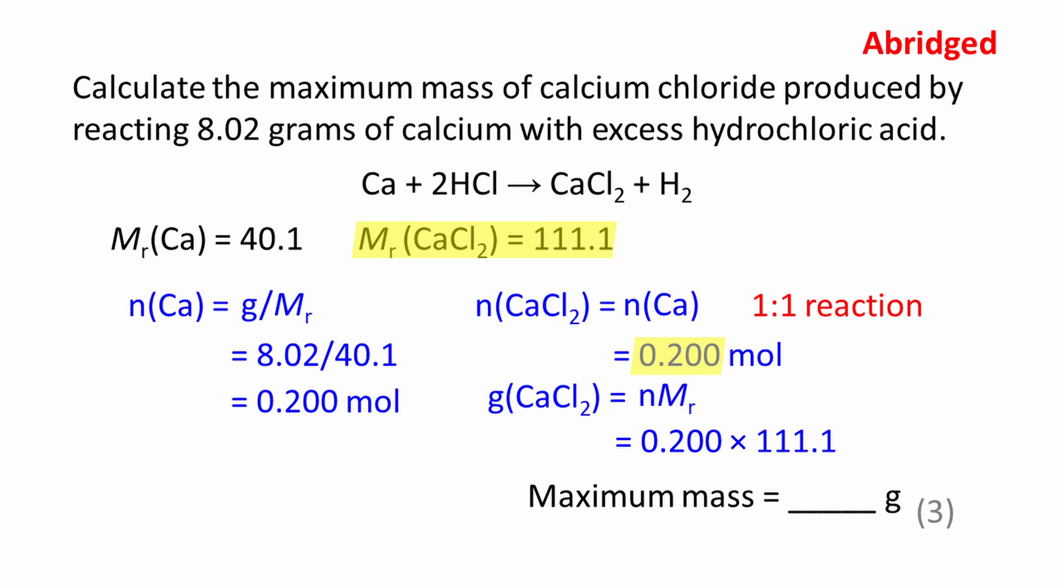To work out the mass of calcium chloride, we use: mass equals amount multiplied by molar mass. The maximum mass of calcium chloride that can be produced is 22.2 grams.